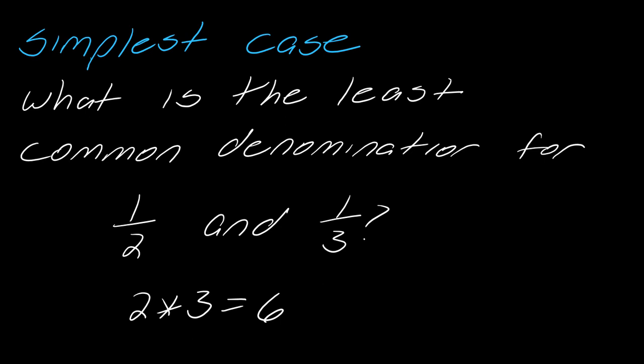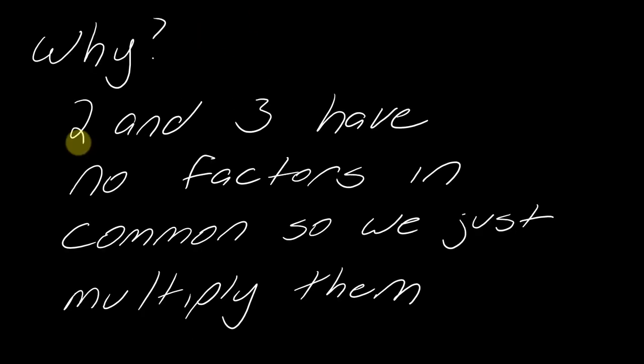So why is that the LCD? It's because 2 and 3 have no factors in common. In general, when you have just two fractions and they have no factors in common, then you can just multiply them to get the LCD. So when denominators have some factor in common, that's what makes this a little tricky.